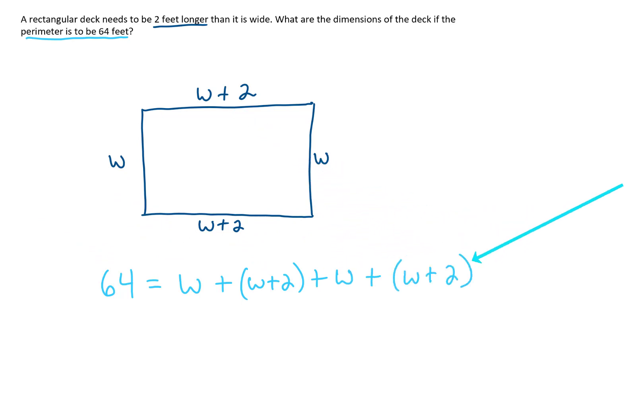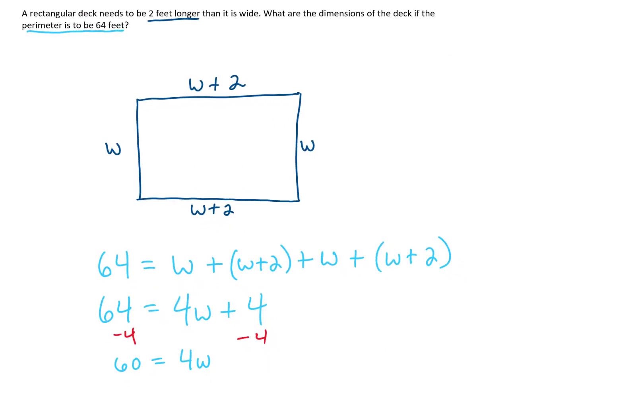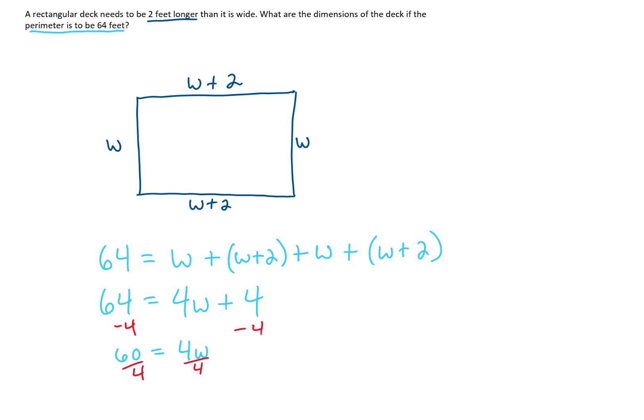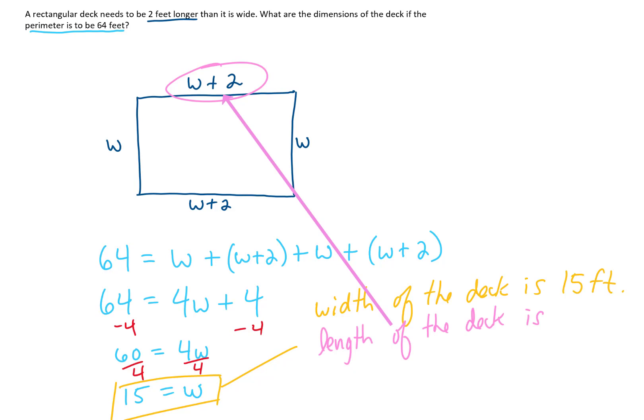Now, we have an equation here with a bunch of like terms. We have 4 W's that can all be combined into 4W. And we have this 2 plus this 2, which can be combined to make 4. Now, we have ourselves an equation to solve, which we can start by subtracting 4 from both sides. On the left, that gives us 60. On the right, the 4s cancel, which was the idea, and we get 4W. Now, we need to find that W, but it is being multiplied by 4. So to get rid of that, we need to divide by 4. On the left side, we need to do 60 divided by 4, which turns out to be 15. And on the right side, the 4s cancel, and we're just left with W. So this equation right here tells us that the width of our deck is 15 feet. If we need the length of the deck, well, we know that that is W plus 2. So we can add 2 to that 15 to get 17 feet as our length. I hope that video gets you started on word problems. I'll see you in the next one.